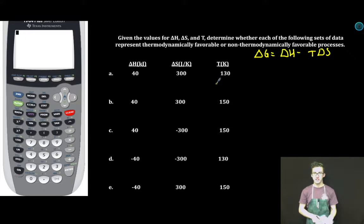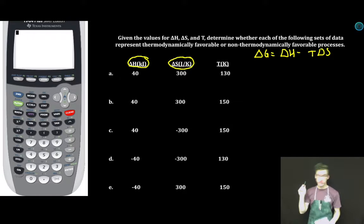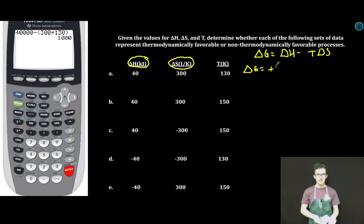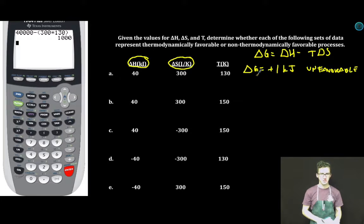Take a look at our first set of conditions. Before I jump to my calculator, let's be cautious about units. Enthalpy change is in kilojoules, entropy change is in joules. So keep that in mind as I jump to my calculator. 40,000 joules minus parentheses 300 times 130 close parentheses. Answer: delta G equals positive one kilojoule. Unfavorable. Positive delta G tells me so.